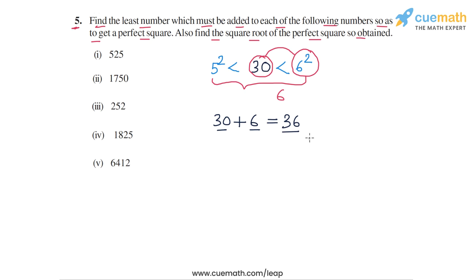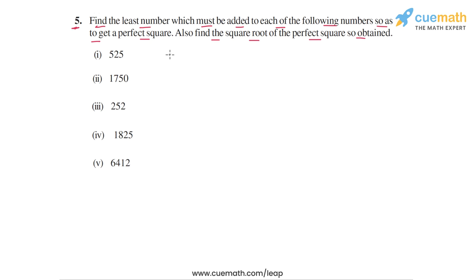This is the exact strategy we will apply to each of the given numbers, and we will use the division method for this purpose. In part 1, we have the number 525. Let's apply the division method of finding square roots to this number. We put bars over pairs of digits starting from the right — a bar over 25 and then a bar over 5.